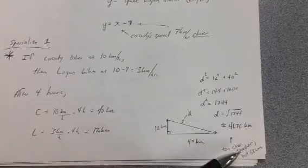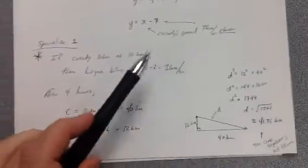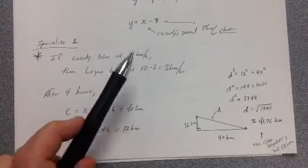However, it's too close together. They're not 68 kilometers apart if Cassidy is traveling at 10 kilometers per hour. So she needs to be going faster.